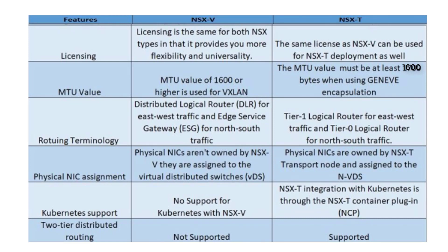For Kubernetes support: NSX-V does not have Kubernetes support. With NSX-T, you can integrate with Kubernetes through the NSX-T Container Plugin (NCP). With NSX-T 3.0 and vSphere 7 with Kubernetes support, it natively supports Kubernetes workloads deployed on the NSX-T network. Two-tier distributed routing, which was not supported in NSX-V, is now supported in NSX-T.